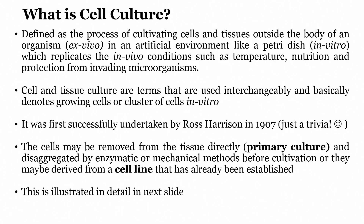Welcome to this module. As we have seen in the last module about cells, let us see what is cell culture. Cell culture is defined as a process of cultivating cells and tissues outside the body of an organism, and when you do that it is called ex vivo. If we are growing the cells on a petri dish, or growing an organoid on a petri dish and studying it in an artificial environment, it is called in vitro.